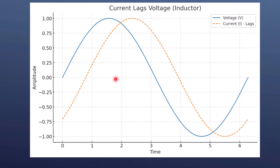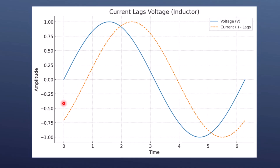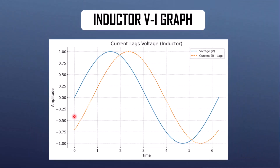Now let's see the voltage and current graph of an inductor. Here you can see the blue line is the voltage curve and the dotted red line is the current curve. You can see that the current lags the voltage by some angle, because the inductor offers opposition to the flow of electric current.